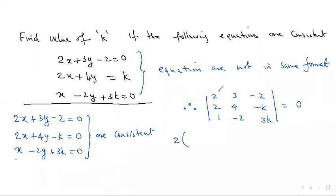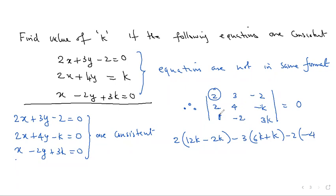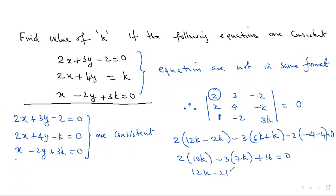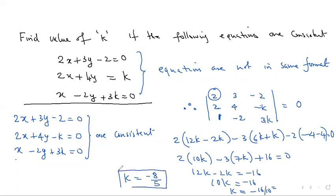Expanding: 2×(4×3k − (−k)×(−2)) − 3×(2×3k − (−k)×1) + (−2)×(2×(−2) − 4×1). That gives 2×(12k − 2k) − 3×(6k + k) − 2×(−4 − 4) = 2×10k − 3×7k + 16 = 20k − 21k + 16 = −k + 16 = 0. So k = 16.